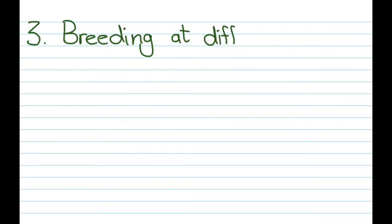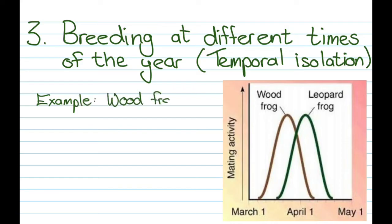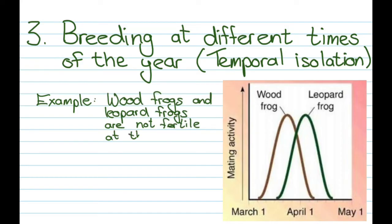Our third one is breeding at different times of the year. This one is sometimes also called temporal isolation, because it has to do with time. An example would be something like a wood frog and a leopard frog. As you can see on the graph, they're not fertile at the same time of the year, which means they cannot breed.